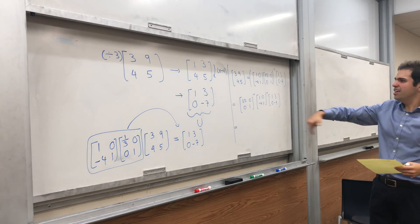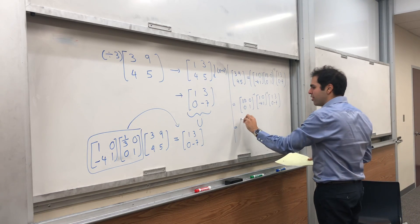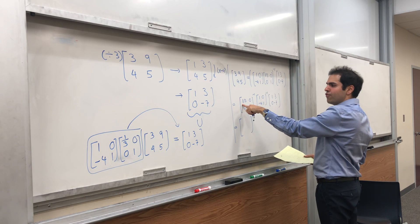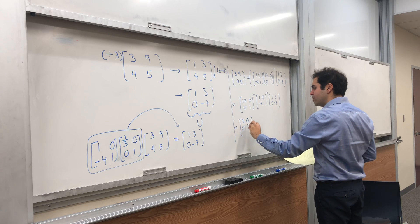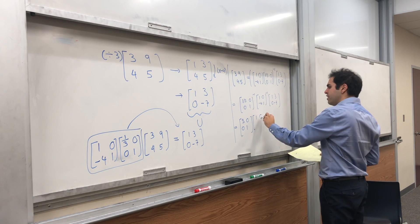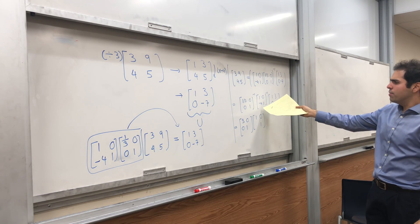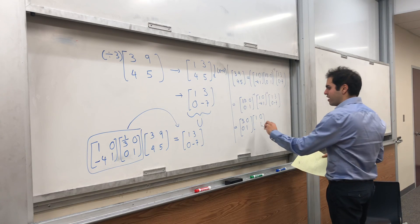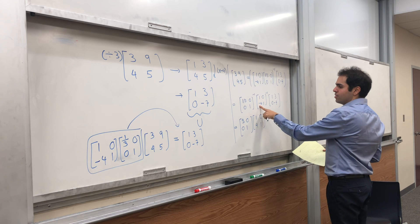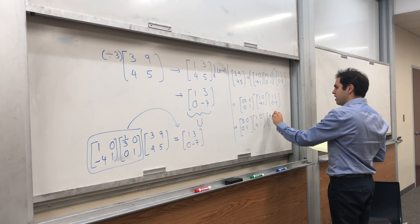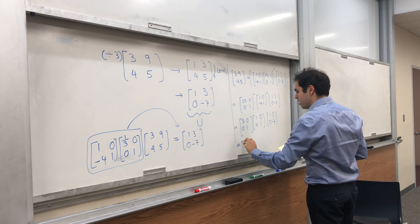And, here's a cool thing. The inverse of an elementary matrix is still an elementary matrix. So, the inverse of dividing the first row by 3 is multiply the first row by 3. So, we get 3, 0, 0, 1, and the inverse of subtract 4 times the first row to the second row becomes add 4 times the first row to the second row. So, 1, 0, 4, 1. You change this minus 4 into a plus 4, and then we get 1, 3, 0, minus 7.